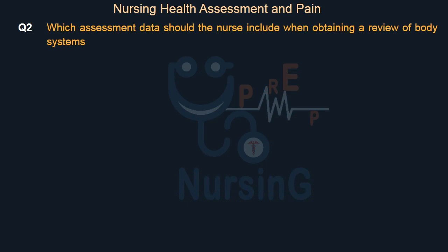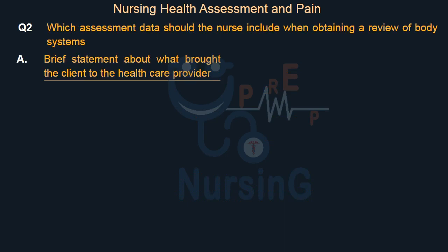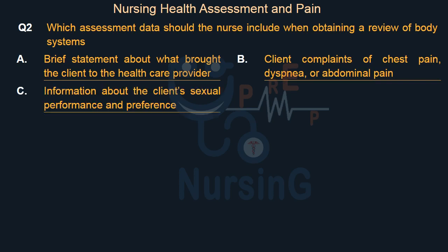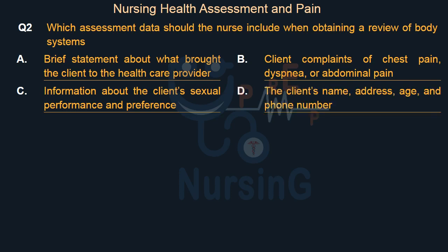Which assessment data should the nurse include when obtaining a review of body systems? Option A: Brief statement about what brought the client to the healthcare provider. Option B: Client complaints of chest pain, dyspnea, or abdominal pain. Option C: Information about the client's sexual performance and preference. Option D: The client's name, address, age, and phone number.